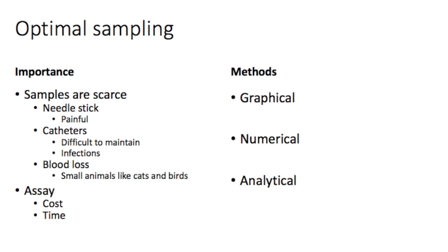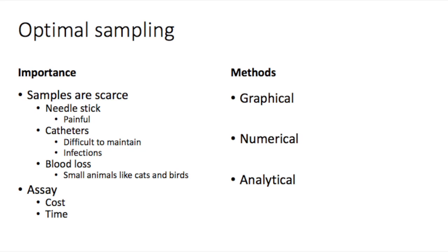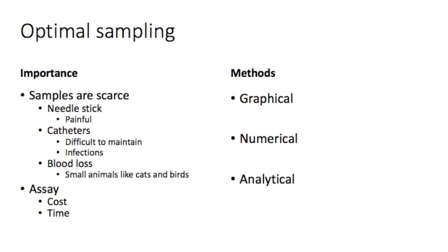Also, in some smaller animals like cats and birds, sampling too aggressively can cause significant blood loss. Also, sample analysis is expensive.